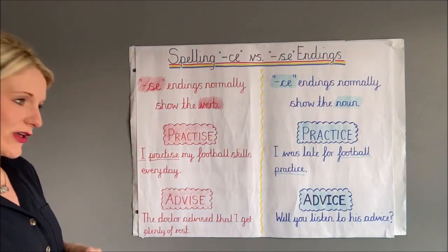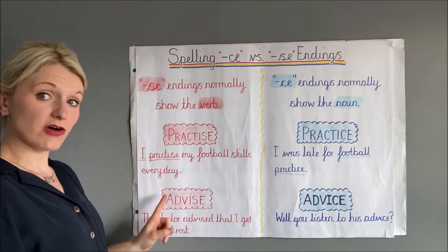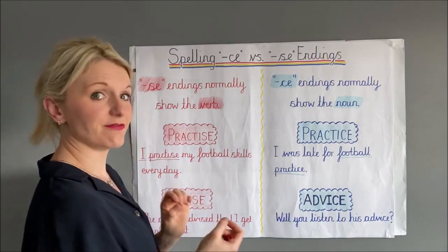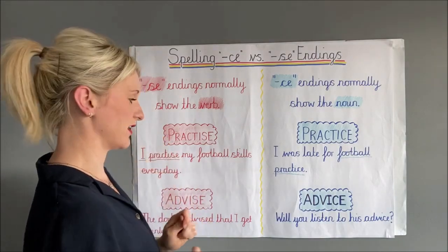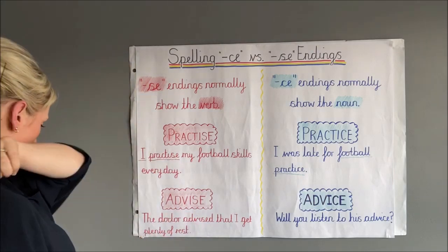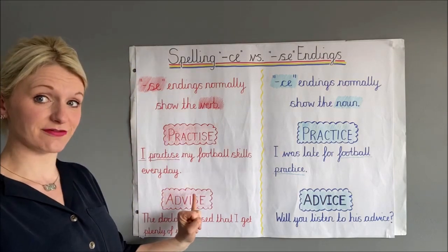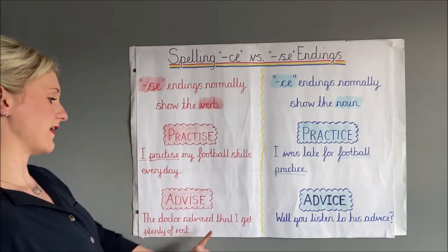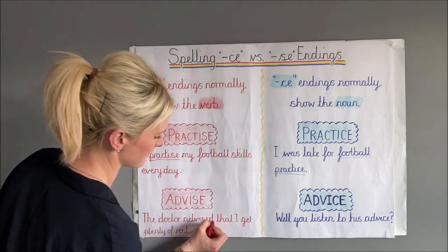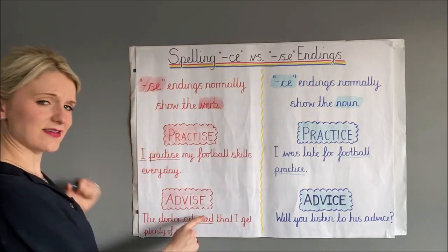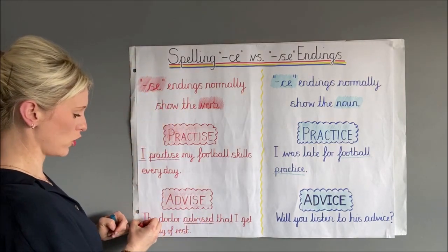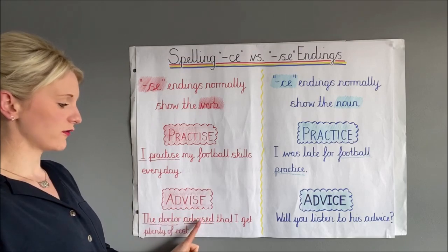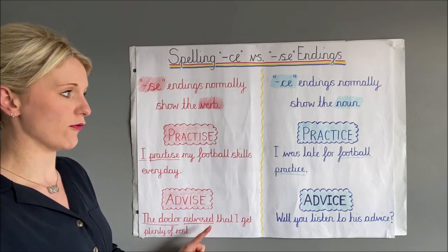Let's have a look at another example. This time we've got advise and advice. Normally there is a slight pronunciation difference between these two, but it is very subtle and very hard to tell apart. Here we have the word advise, and the sentence is 'the doctor advised that I get plenty of rest.' There is my verb advised, and I can see someone doing that — the doctor. So the doctor is doing the advising, and this is being used as a verb. So I've correctly used the SED form of the verb.